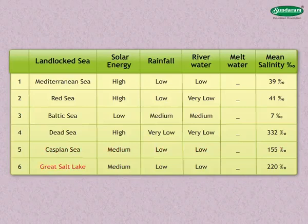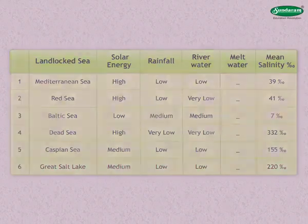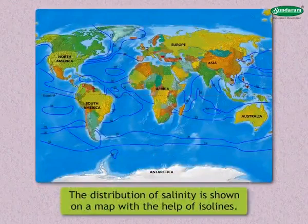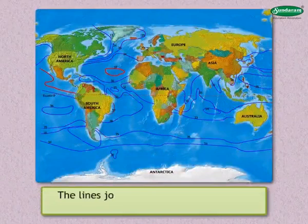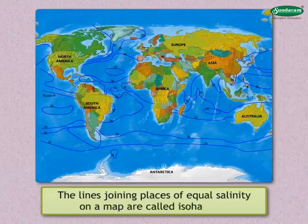In the Great Salt Lake, the solar energy received is medium, the rainfall is low, the supply of fresh water by rivers is low, and the mean salinity is 220 per thousand. The distribution of salinity is shown on a map with the help of isolines called isohalines — lines joining places of equal salinity.